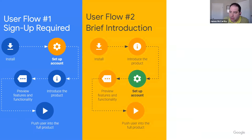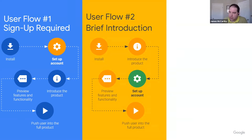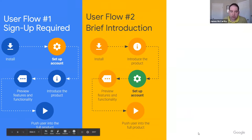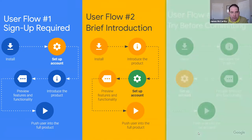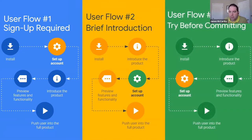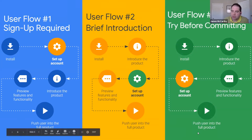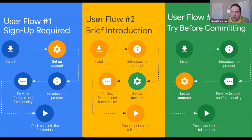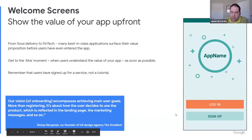The second flow is where you're able to introduce the product first. People might know your brand a little, but they aren't familiar with what features you offer. You give them the value proposition, but before they get any features, they have to set up an account. FinTech is a really good example — you're required by law to capture some information before they can do something. The final flow is try before you buy — you give them demo functionality, free features, but if they want to complete an action, they have to go through and complete the sign-up.